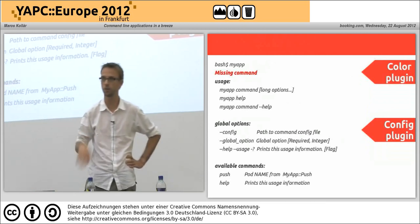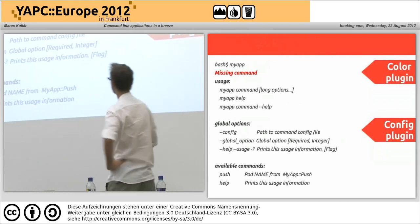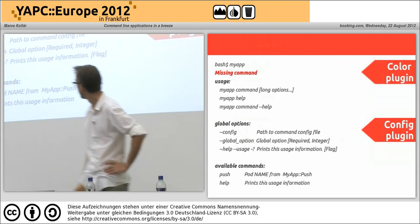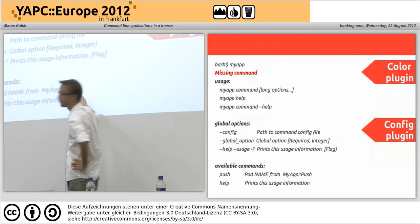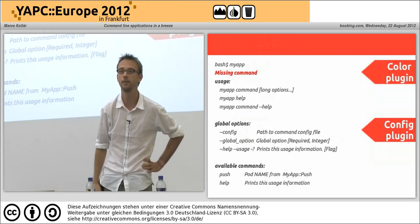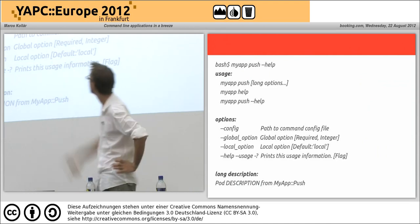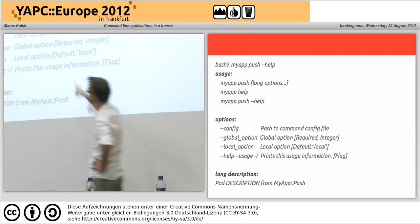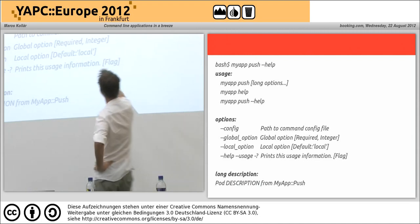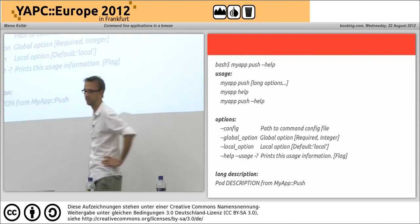It would also add a config option due to the config plugin, which allows you to have configuration files. There's a help attribute which lets the user request help, and the documentation is taken from the POD of the file or can be specified via the meta class. For the 'push' command help, it would say 'default: local', indicate that this is required, that it's an integer, and that another option is just a flag. It also shows the POD.